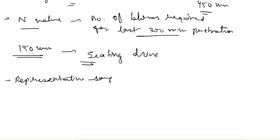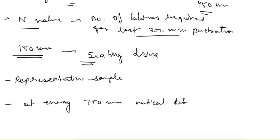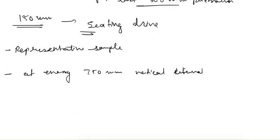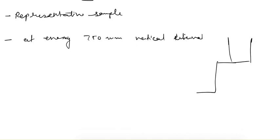We can obtain a representative sample from this test at a 750 mm vertical interval to find out the soil profile in the field. So if the first test is conducted at one depth, the next test would be conducted 750 mm below that level.